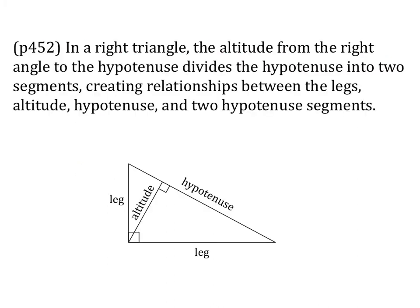Now, in a right triangle, the altitude from the right angle to the hypotenuse divides the hypotenuse into two segments, creating relationships between the legs, altitude, hypotenuse, and the two segments of the hypotenuse. Here I've labeled my picture — my legs are the two perpendicular sides, and the altitude in this case is the altitude from my right angle to my hypotenuse.